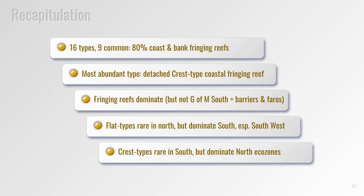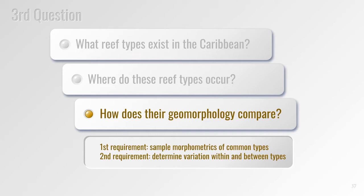To recap: the Caribbean has a total of 16 reef types, nine of which are common. 80% are fringing reefs in coastal and bank settings; the most abundant type is the detached crest type coastal fringing reef forming 43% of all fringing reefs. Although fringing reefs dominate in all areas, flat types are more common in the south and crest types more common in the north. Now let's move on to the final and most interesting question: how does the geomorphology of these reef types compare? Are they similar to each other and form part of an evolutionary sequence as Darwin claimed, or are they different and form more than one reef type?